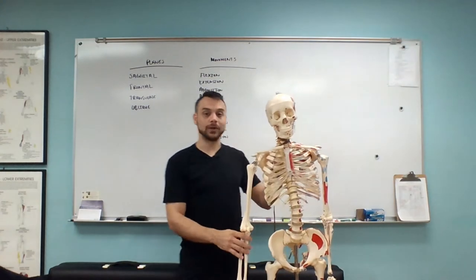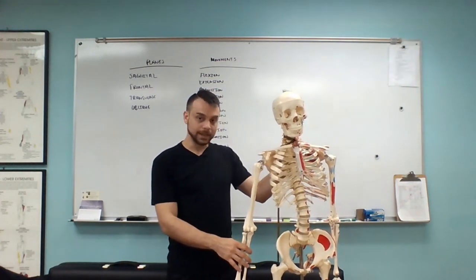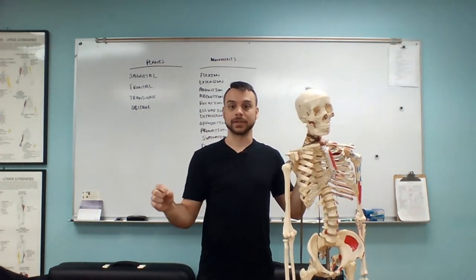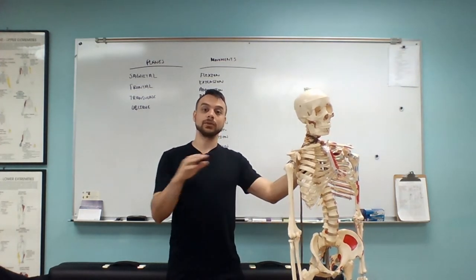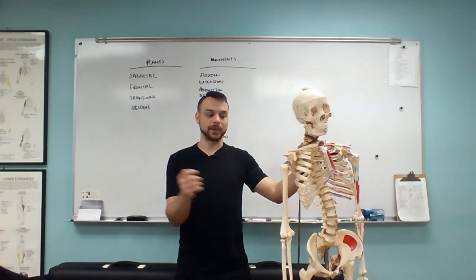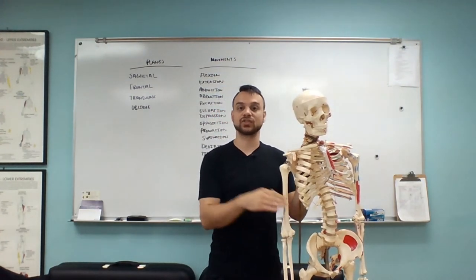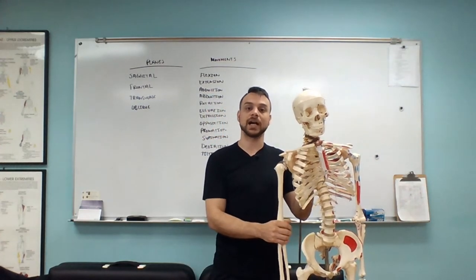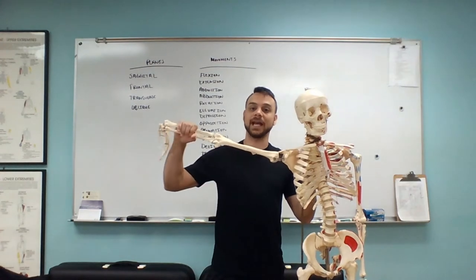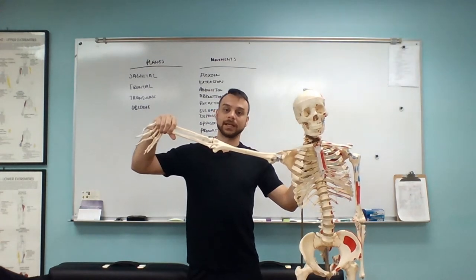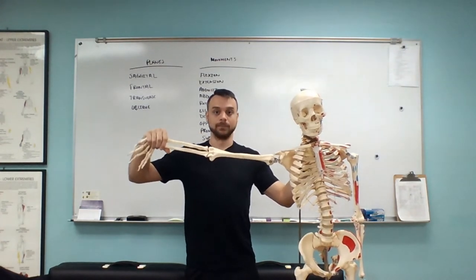Then we have adduction and abduction. Pay very close attention because that tiny one-letter difference makes a huge difference. If we have the B in there, we have abduction — think like subtraction. Subtraction means you're taking away from something, so abduction means taking away from the midline of the body and coming out towards the side. Adduction means to bring it back to the body — like addition, we're adding to the body.